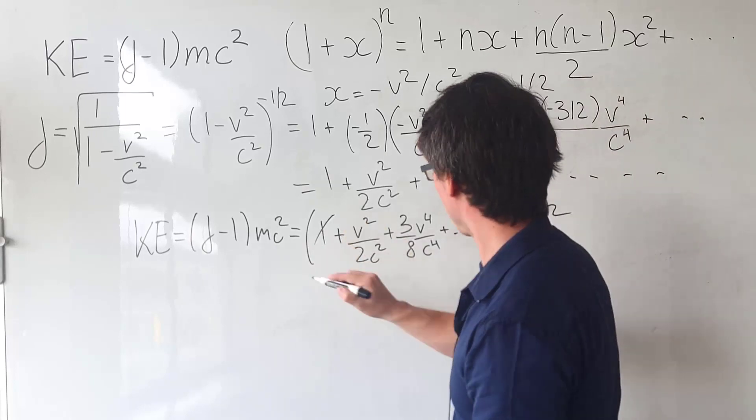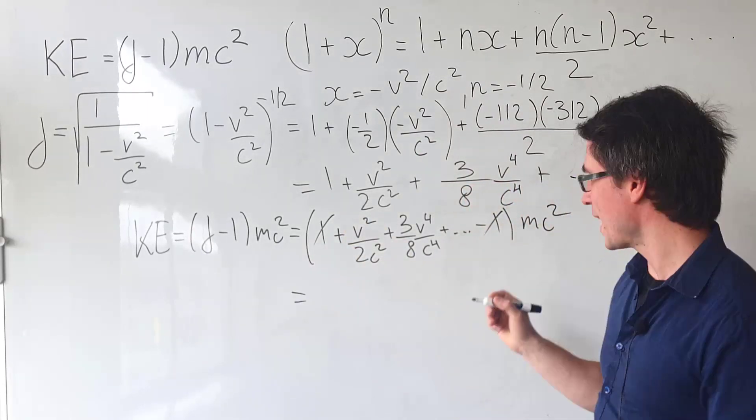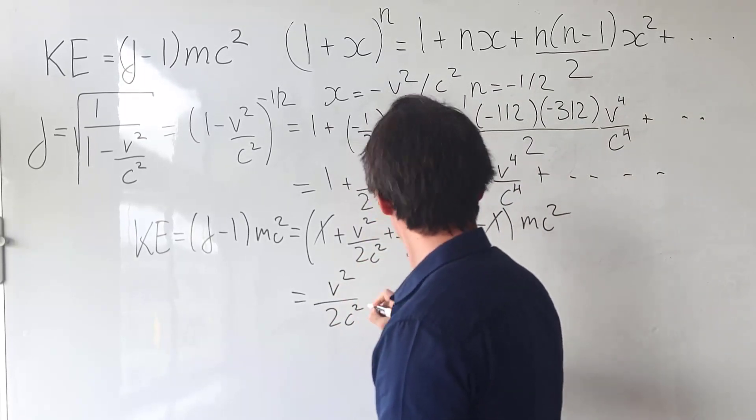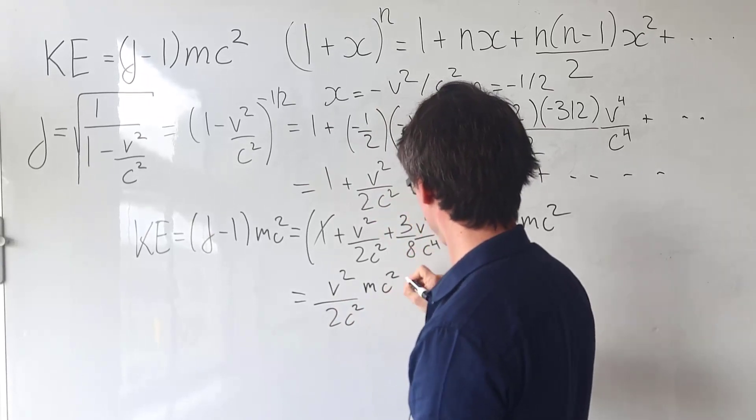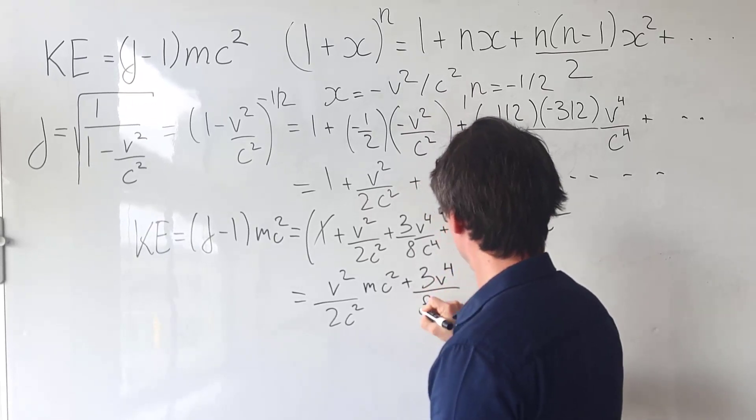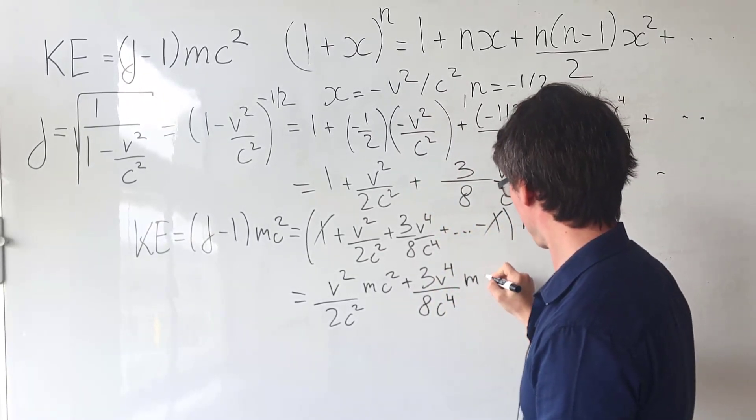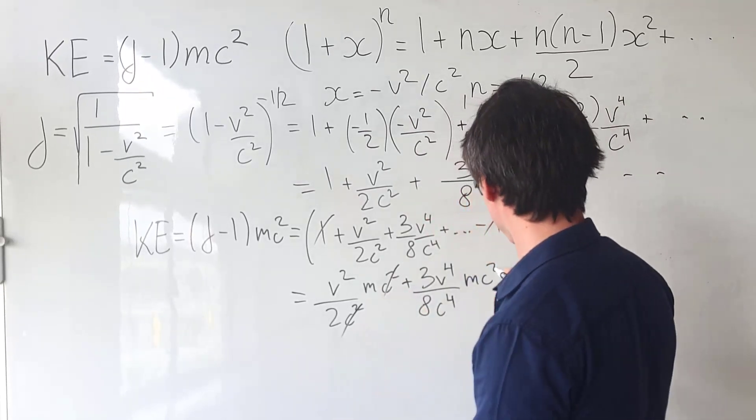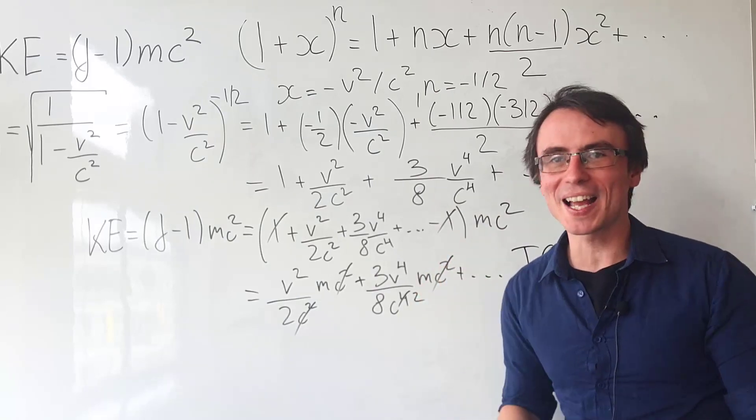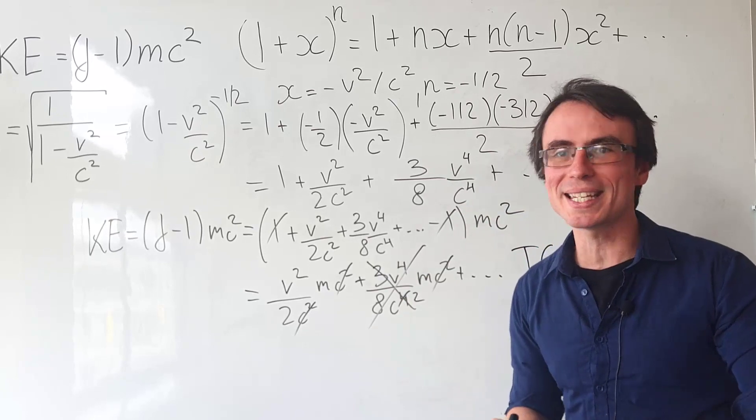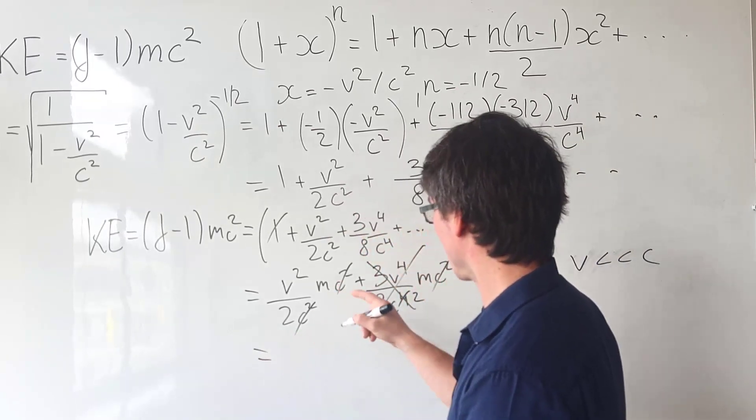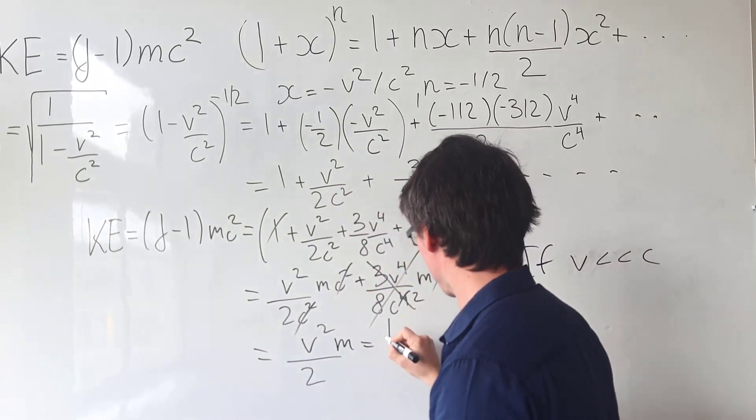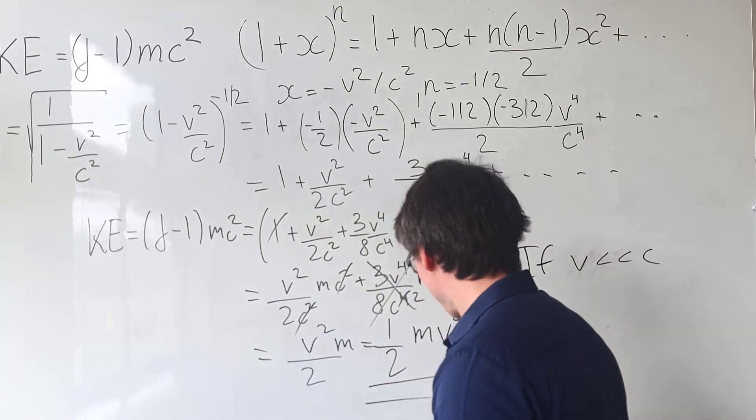So plus one and negative one are going to cancel out and what we're left with will be equal to v squared over two c squared times mc squared plus three v four over eight c to the power of four multiplied by mc squared. And now we can cancel out those factors of c squared. If our speed is substantially below the speed of light, then this term here will be negligible. And what we're going to get is v squared over two multiplied by m, which is just equal to a half mv squared.